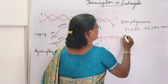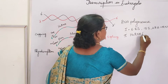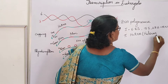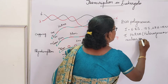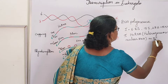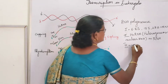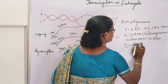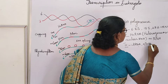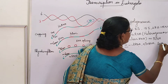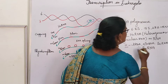RNA polymerase 2 is responsible for HnRNA, that is heterogeneous nuclear RNA, and mRNA synthesis. RNA polymerase 3 is responsible for tRNA, 5S rRNA, scRNA, and snRNA — small nuclear RNA — synthesis.